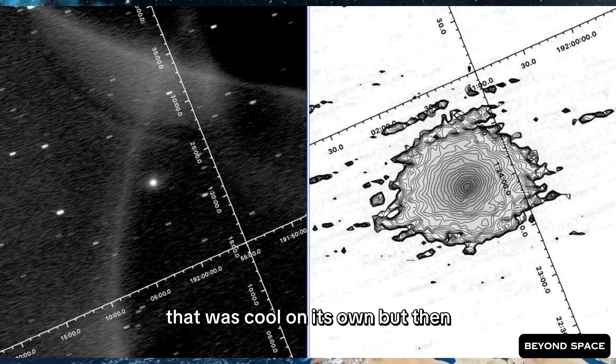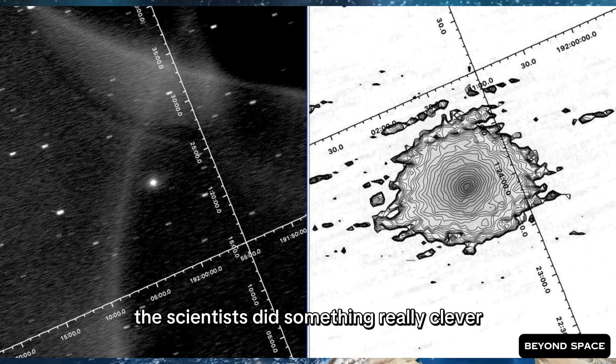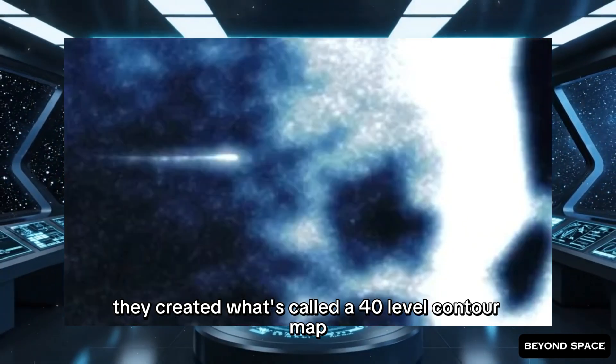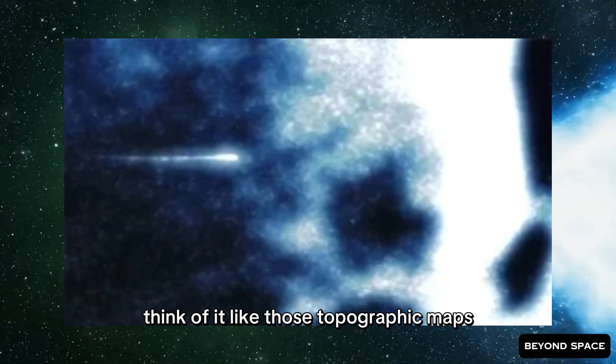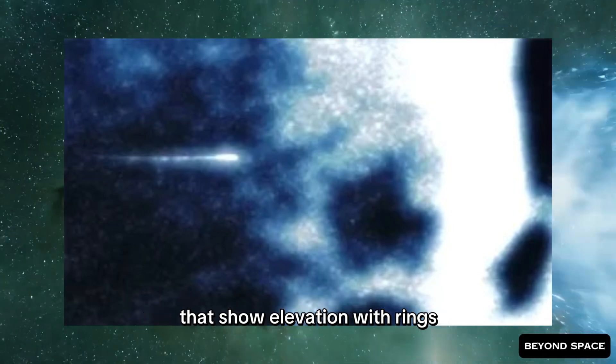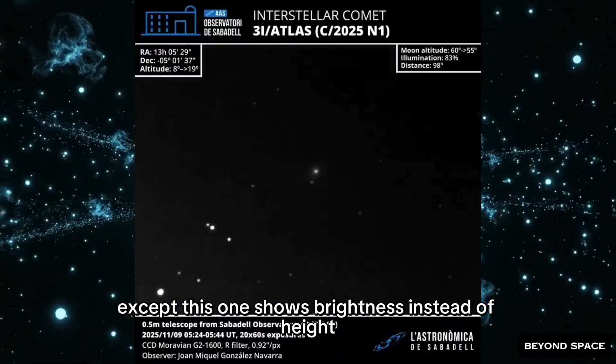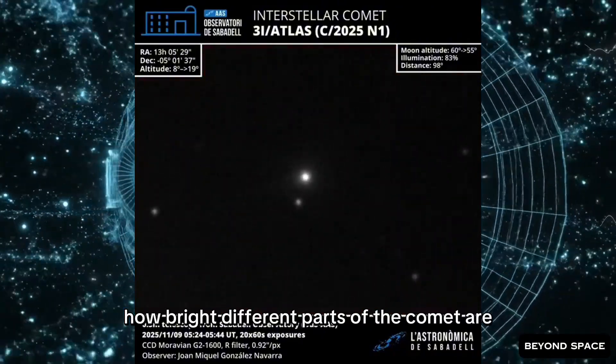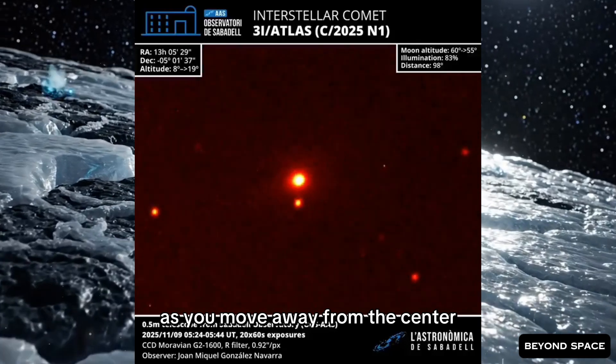That was cool on its own. But then the scientists did something really clever with this image. They created what's called a 40-level contour map. Think of it like those topographic maps that show elevation with rings. Except this one shows brightness instead of height.